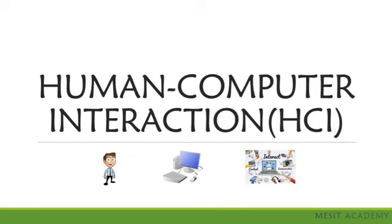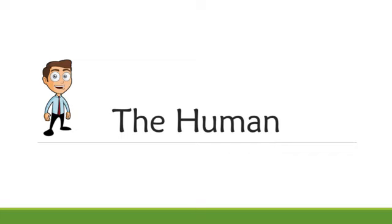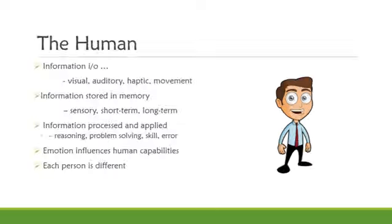Hi everyone, this is Duj from MESIT Academy. In the previous lecture, we learned about human-computer interaction — a discipline concerned with the design, evolution and implementation of interactive computer systems for human use, and with the study of major phenomena surrounding them. In this lecture, we will be talking about the UMA, which are the users of the system. The UMA are the ones who we design the computing system for, so it is important to first understand the UMA as our first priority.